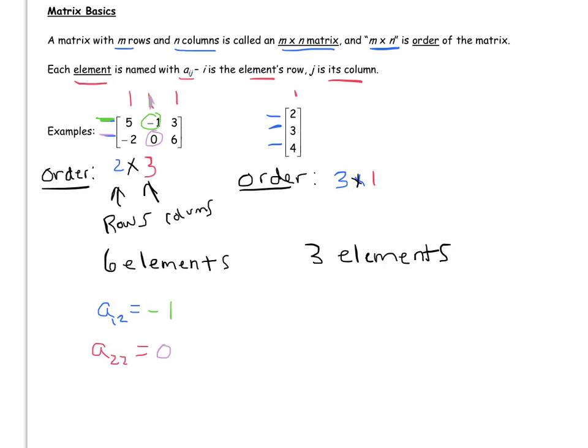Over here, A 1, 1 would be identifying the element in the first row and the first column, the only column there is. So that would be 2. A 1, 2 would be 3, A 1, 3 would be 4. And A 2, 2, notice, would not have an answer because there aren't two columns in this matrix. So I can't refer to it.